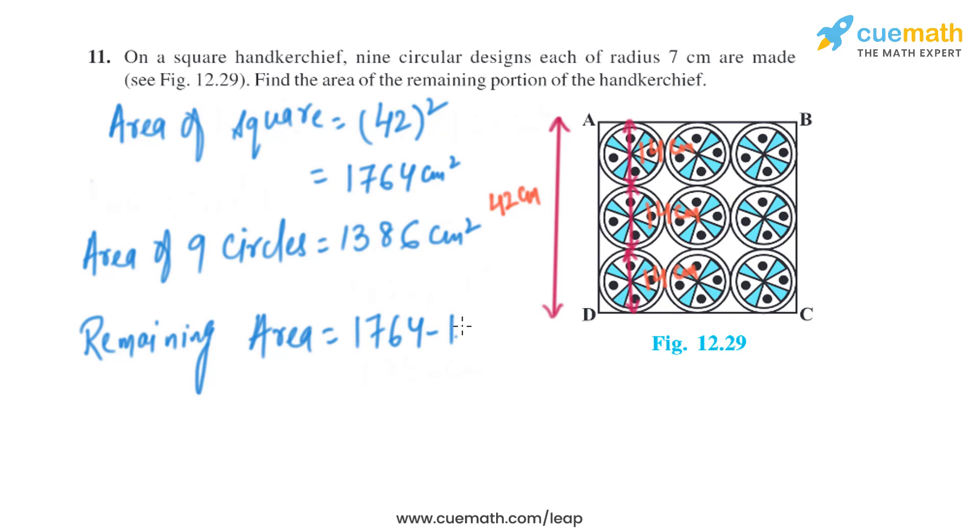Now to find the remaining area, we just need to subtract them. So it will be 1764 minus 1386, which is the same as 378 square centimeters. So that is the area of the remaining portion of the handkerchief.